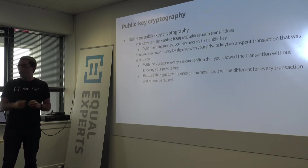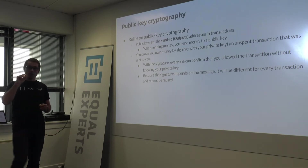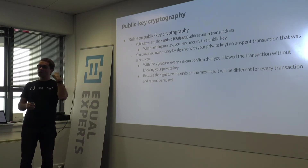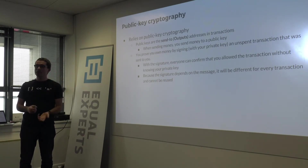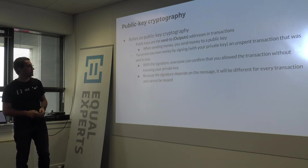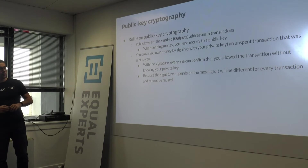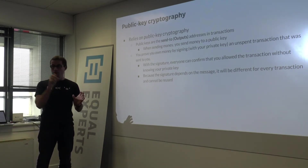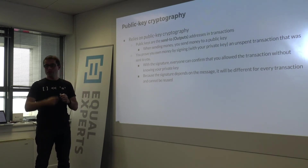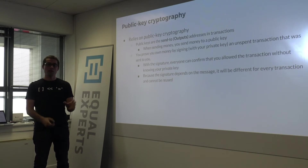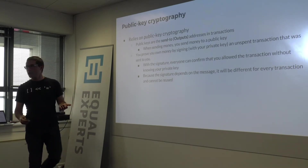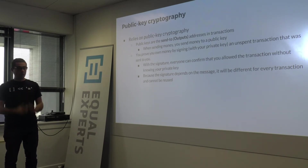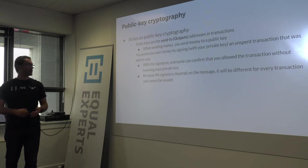You prove that you own the money by signing, with your private key, an unspent transaction that was sent to you. Because you don't have a balance, you can't simply say 'I have $1,000 and I want to send $10.' What we have is a chain of transactions — you need to point to transactions that were sent to you and that are marked as unspent. You authorize an amount from those previous transactions to be used in a new transaction, and you sign it. That signature cannot be reused, making the system tolerant to double-spending attacks.